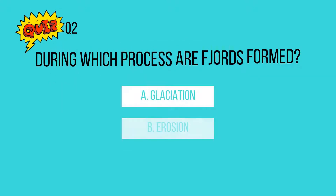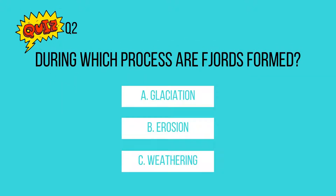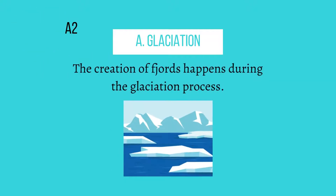Question 2: During which process are fjords formed? A. Glaciation. B. Erosion. C. Weathering. The answer is A, glaciation. The creation of fjords happens during the glaciation process.